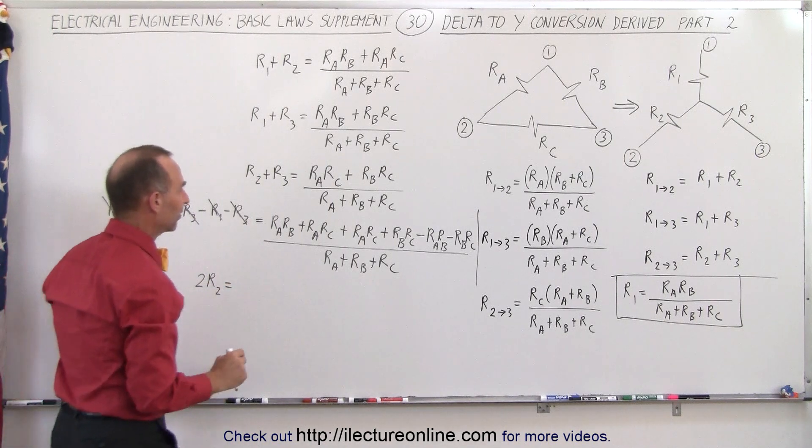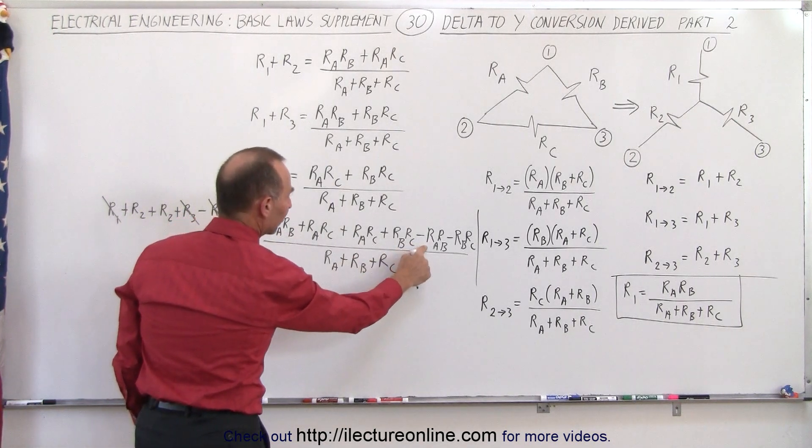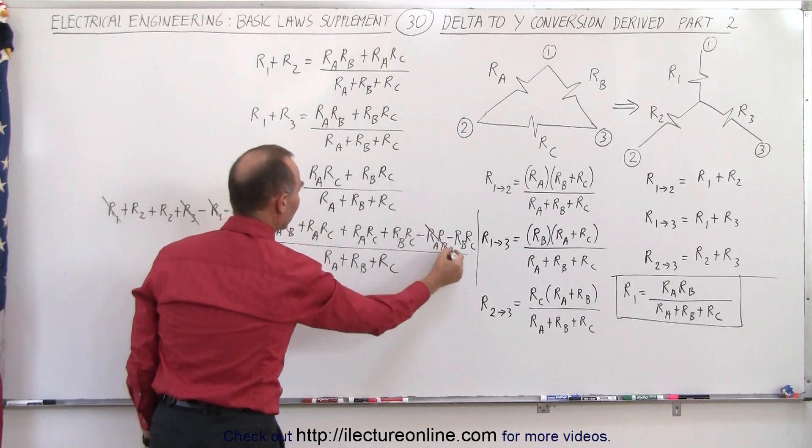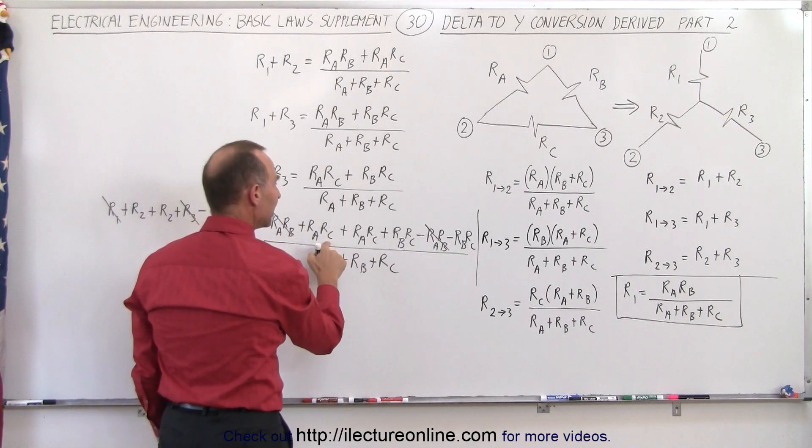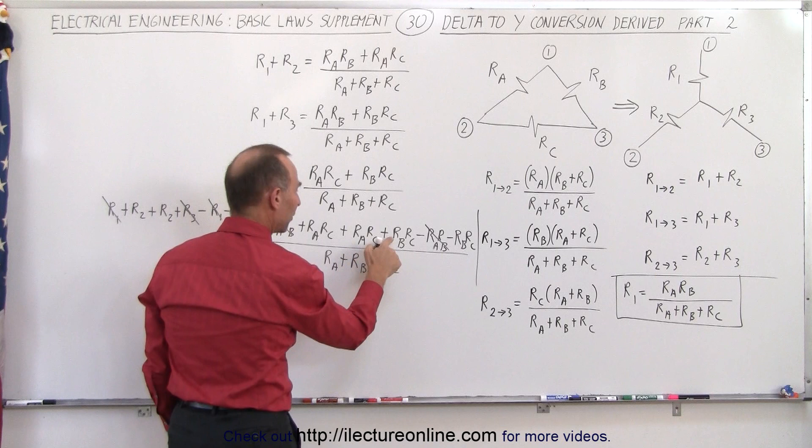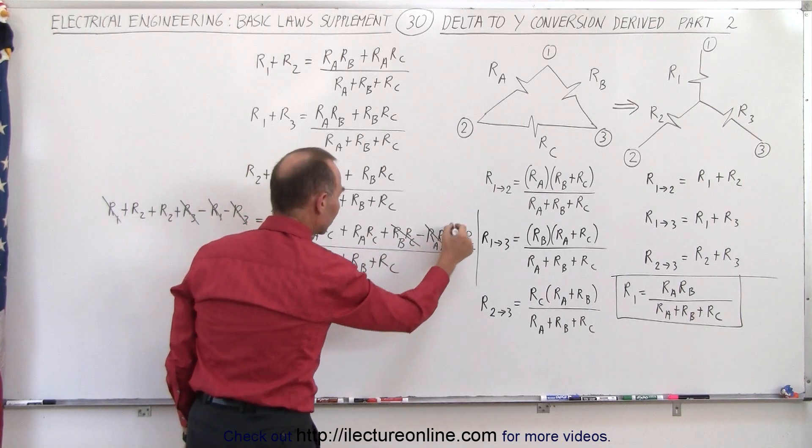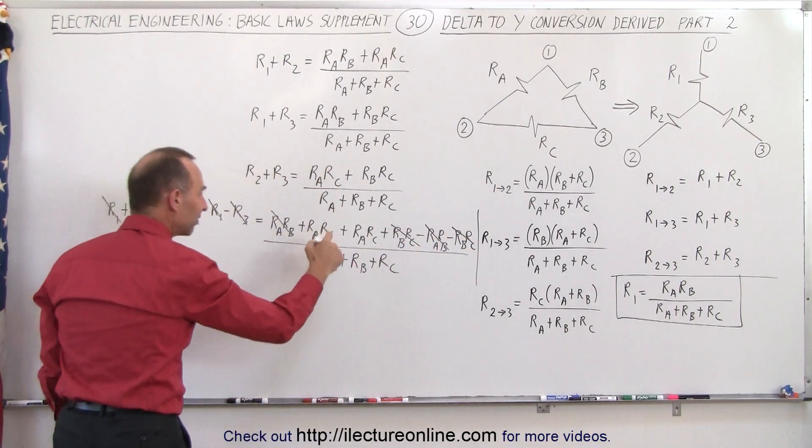On the right side, let's see here. We have a Ra Rb and a minus Ra Rb, so this cancels out with that. We have a Ra Rc, and no, we don't have that. We have a plus Rb Rc and a minus Rb Rc, so those cancel out.